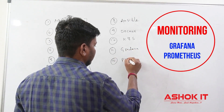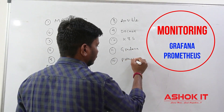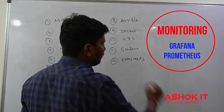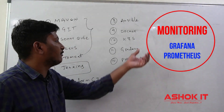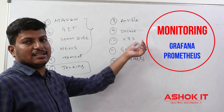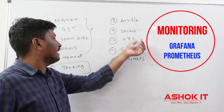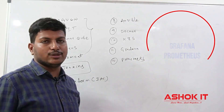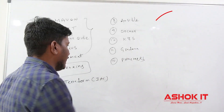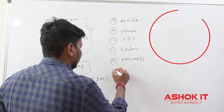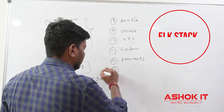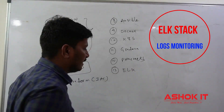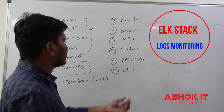Along with these things we are going to use some monitoring tools also, like Grafana and Prometheus. Grafana and Prometheus are used to monitor our Kubernetes cluster, and the containers which are running in the cluster can be monitored by using these tools.